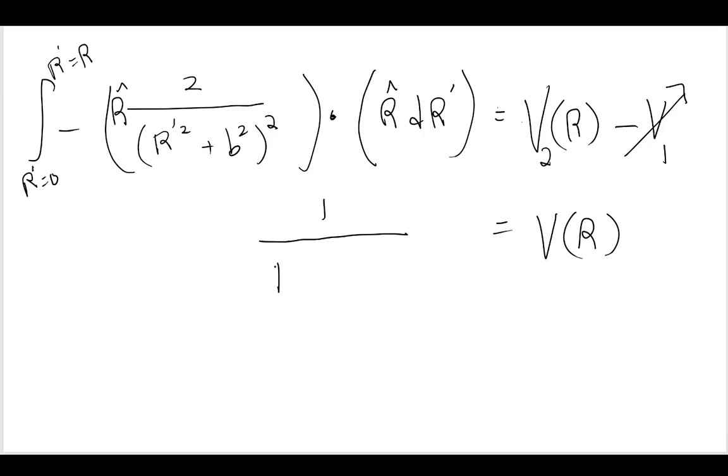And we're going to be left with R-hat over R squared plus b squared like this. Okay, now substituting this in, we can see that this is going to be one over R squared plus b squared minus one over, this is going to be zero, one over b squared is equal to the voltage at any point R.